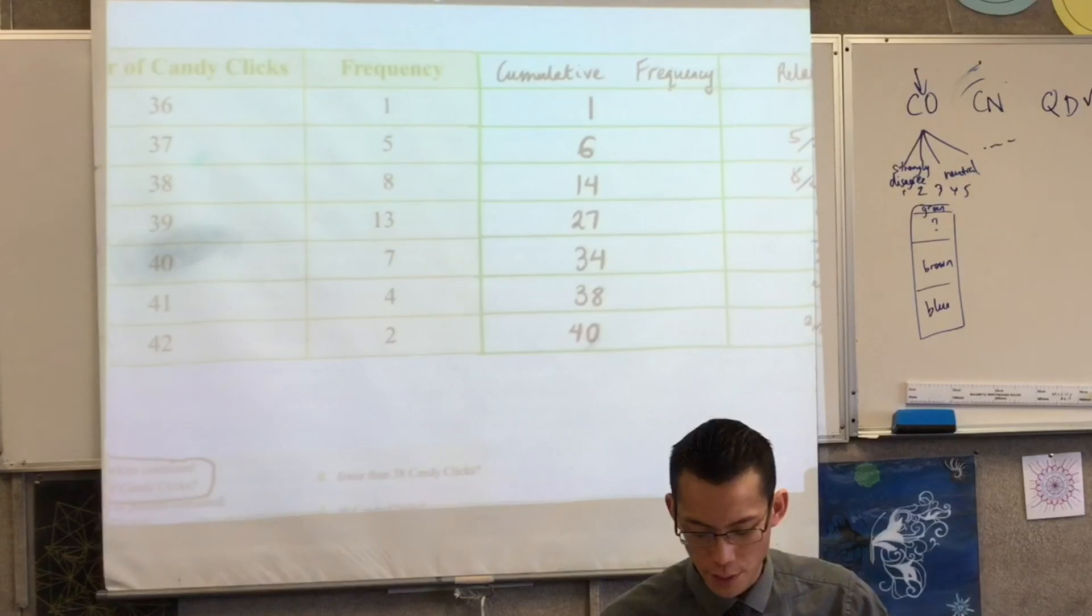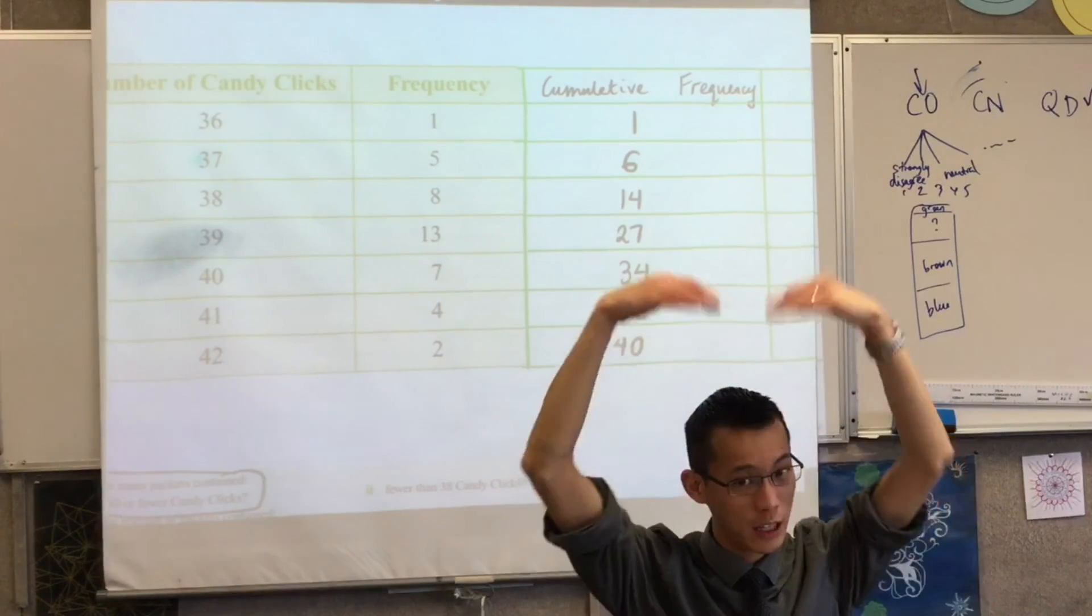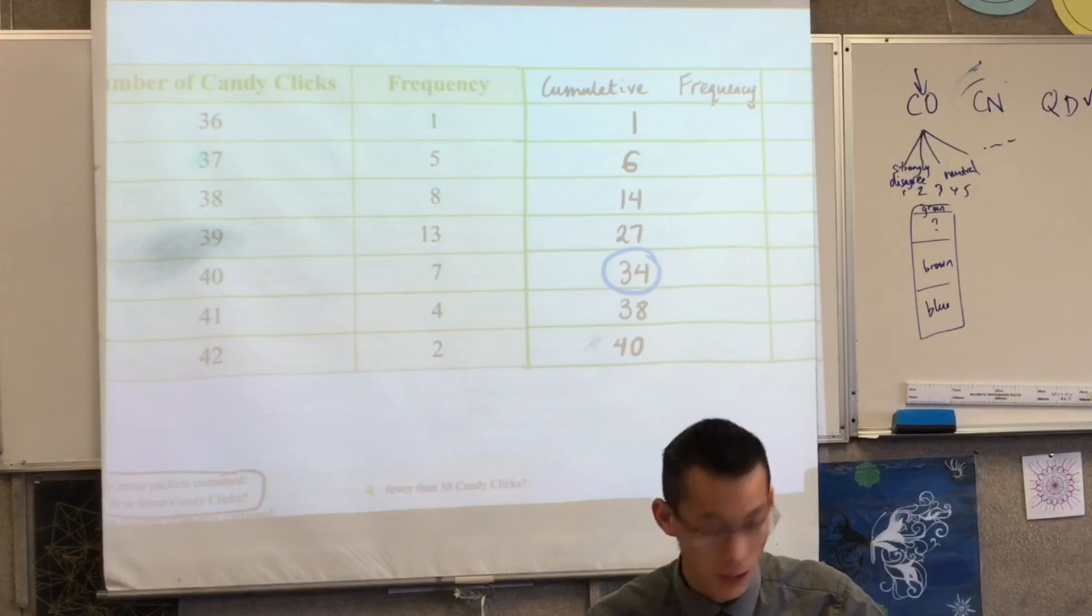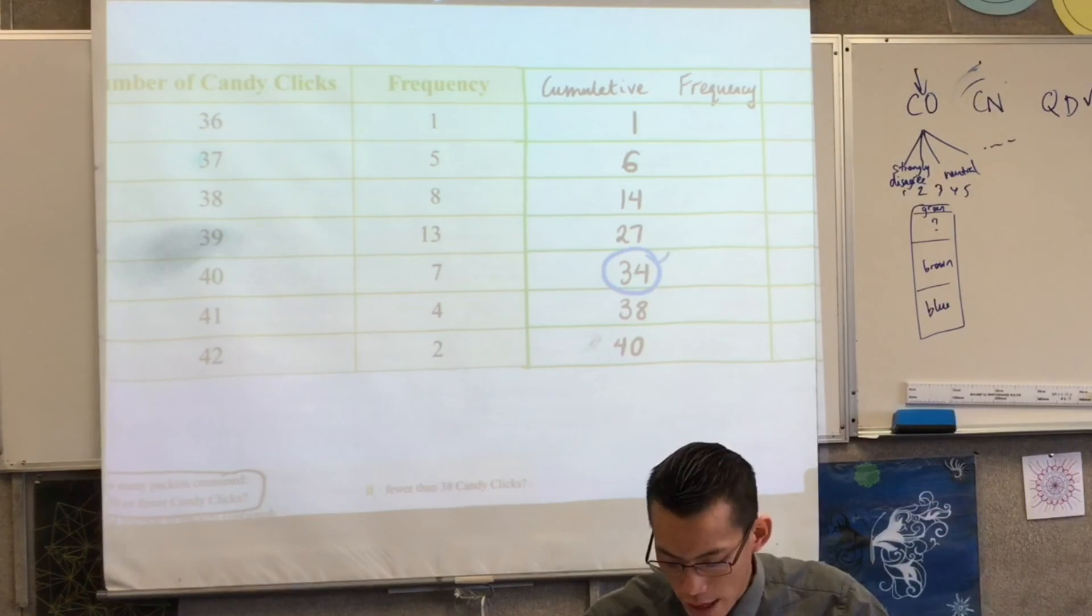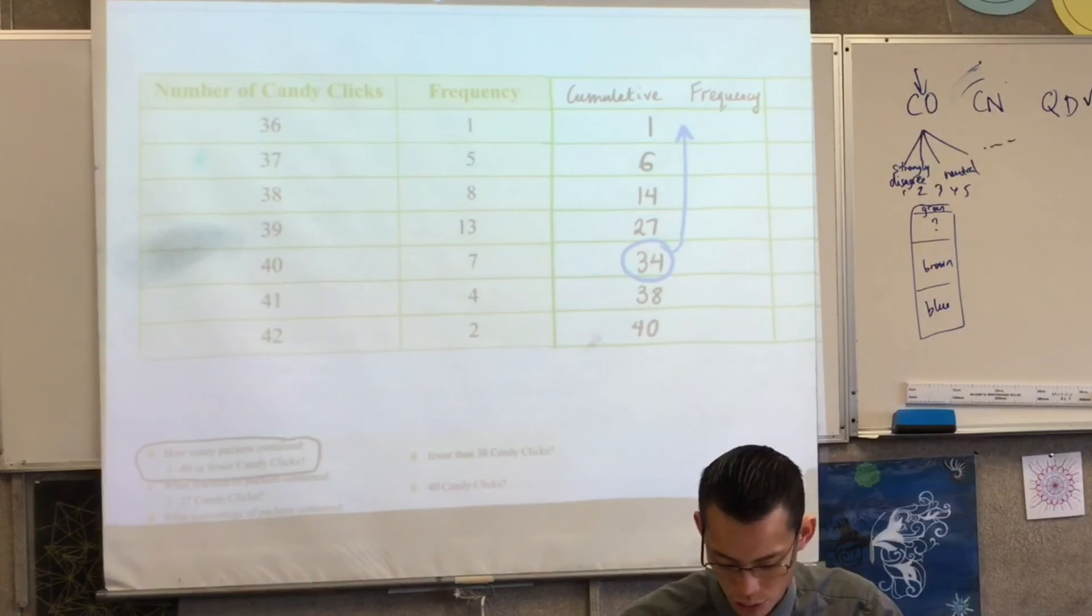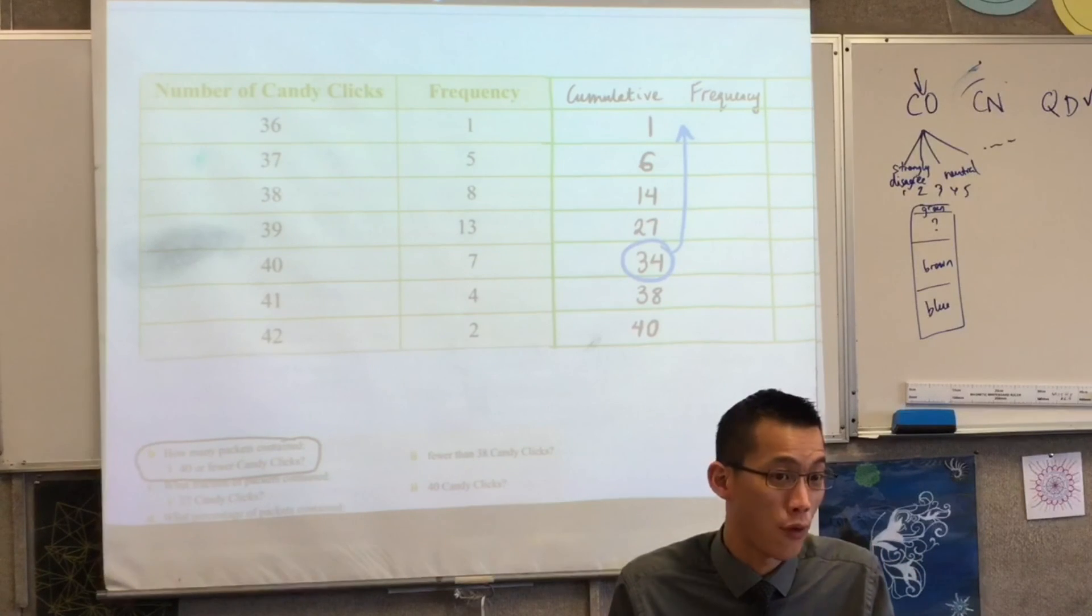So what I'm doing is I'm looking at the cumulative frequency and saying, well, where's 40? And where is all of the ones including that 40 or fewer? So here's 40, 34. That 34 includes all of these numbers. Does that make sense? So my simple answer to how many packets contained 40 or fewer, the answer is 34. 34 of them contained 36 or 37 or 38. That's what the adding did for me.